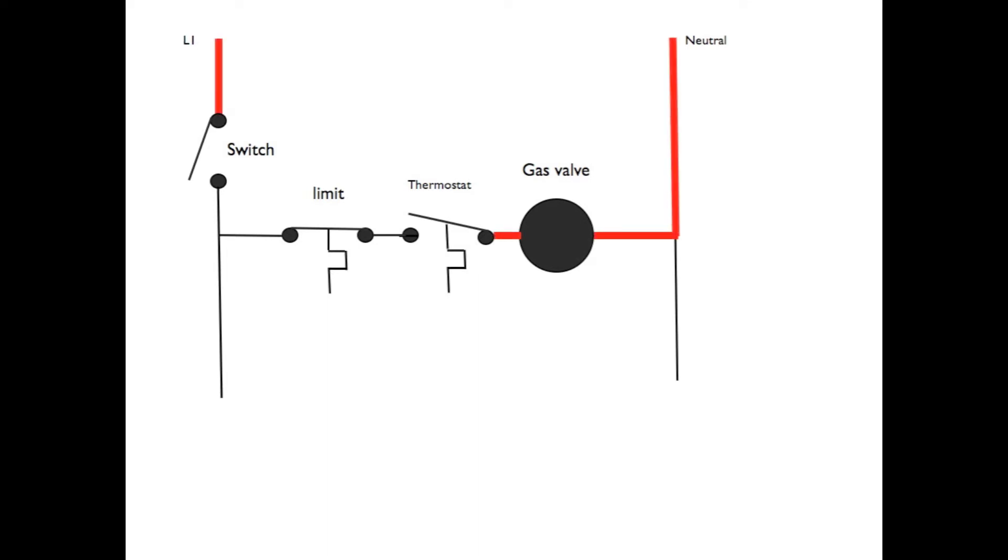Now we're seeing where the power is with everything off. The system switch is open, the limit switch is closed, the thermostat's open, so the power comes to the system switch and it comes to the gas valve to the thermostat. But obviously there's no circuit, so power does not flow through the gas valve.